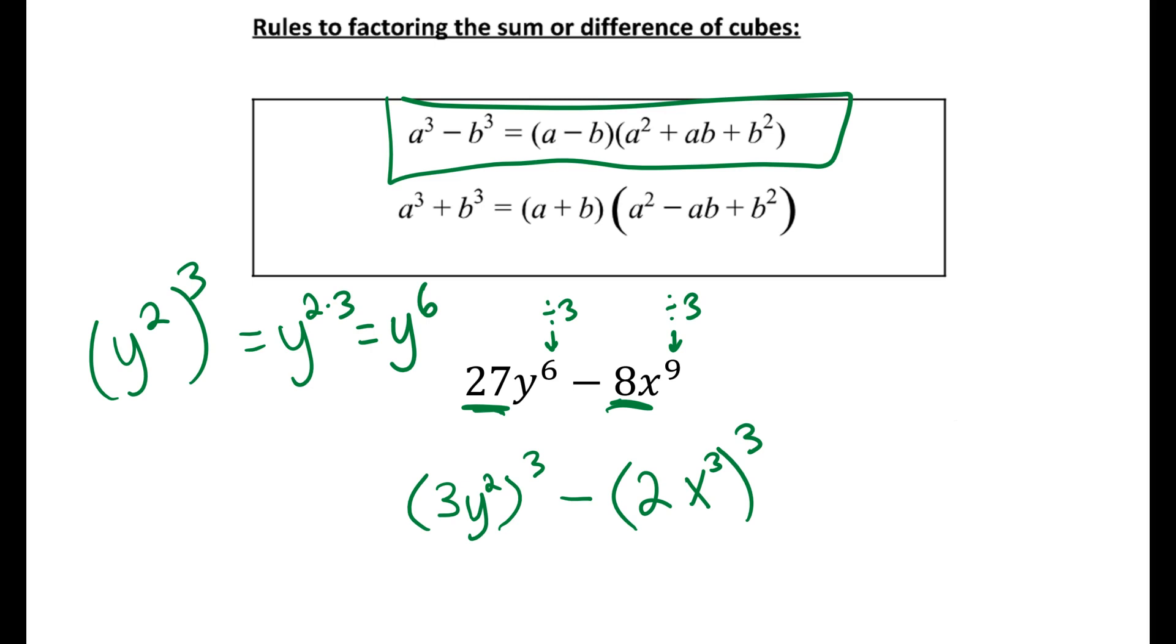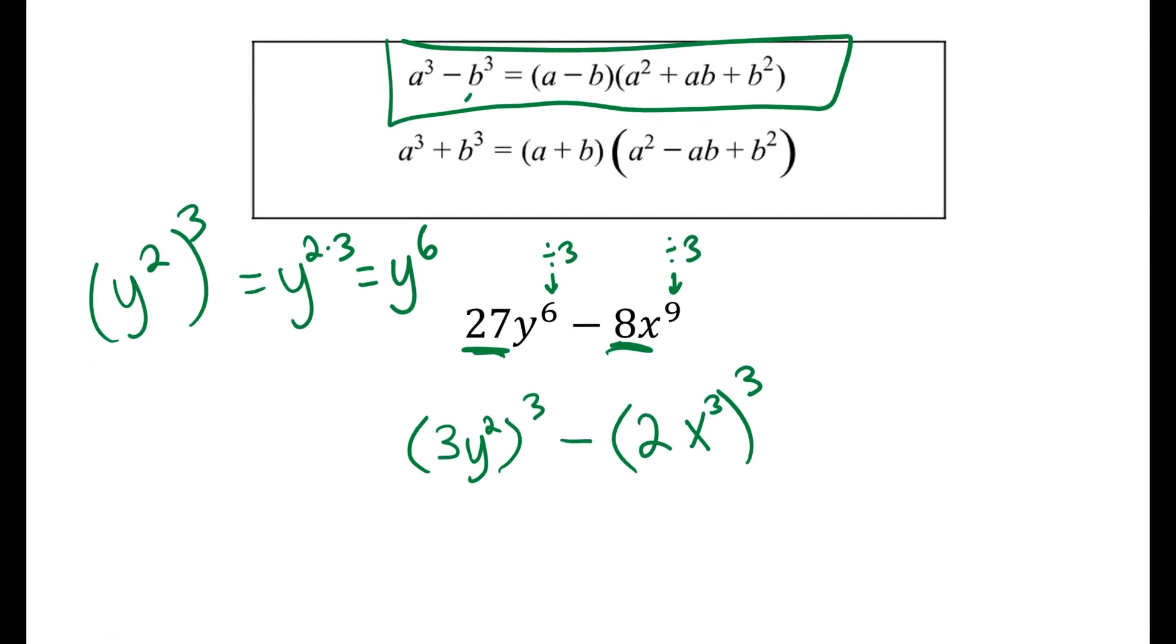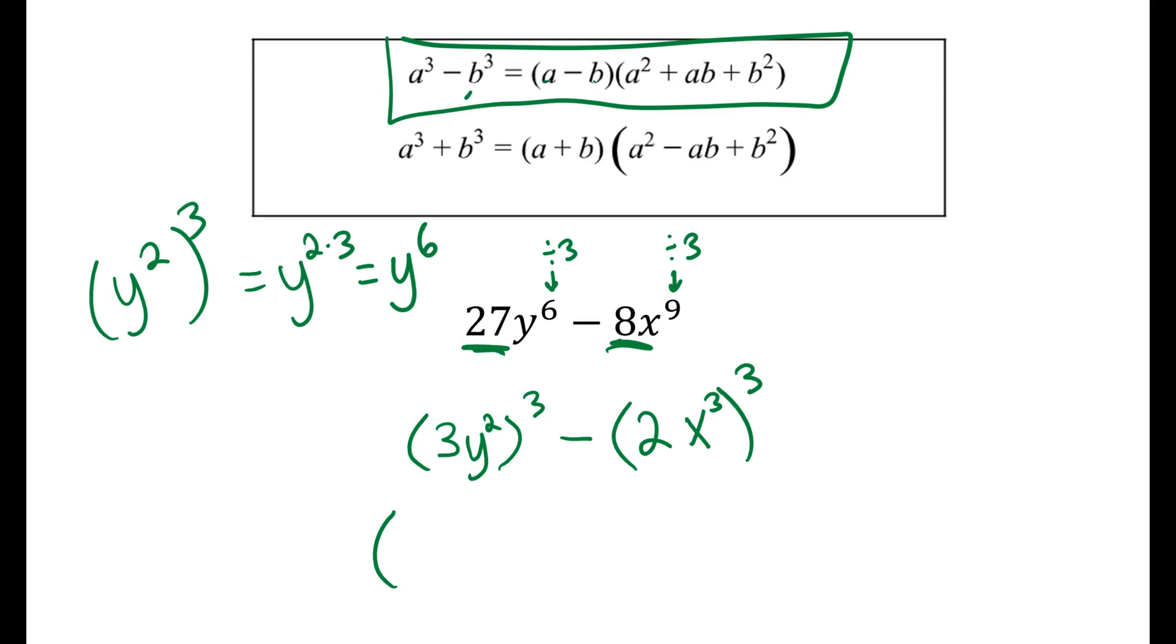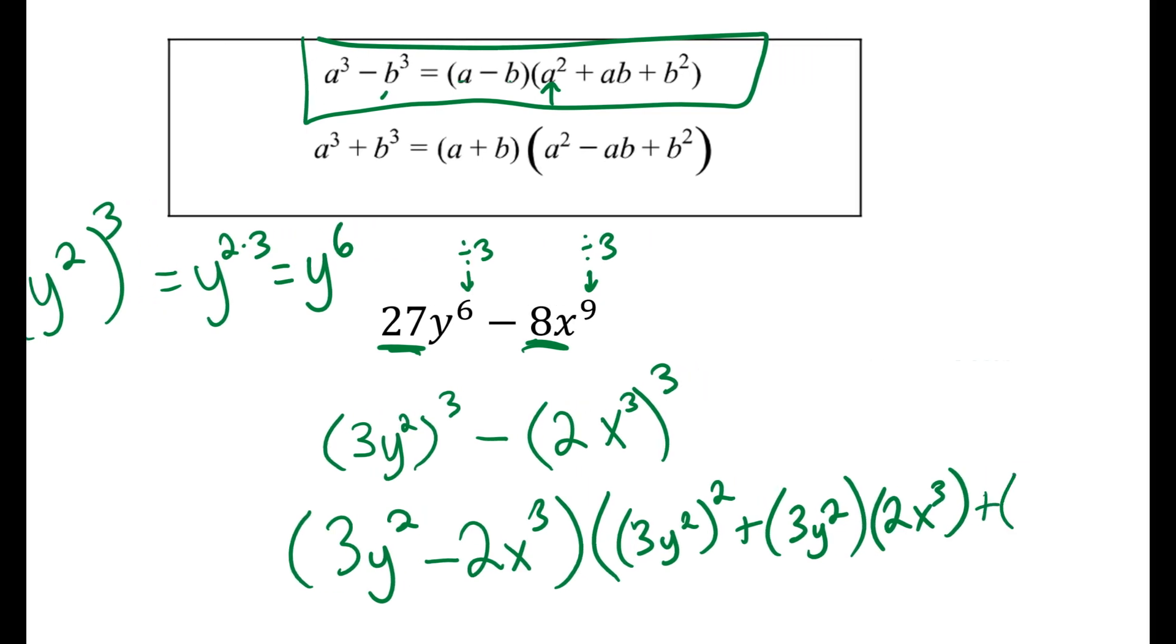So now I've figured out my a value and my b value, so I can substitute into the equation. The formula says take the two things and subtract them: 3y² minus 2x³. Then I take the first thing, 3y², and square it. Notice I'm putting it in parentheses so I remember to square both things. Plus a times b, or 3y² times 2x³, and my second thing squared, plus 2x³ squared.